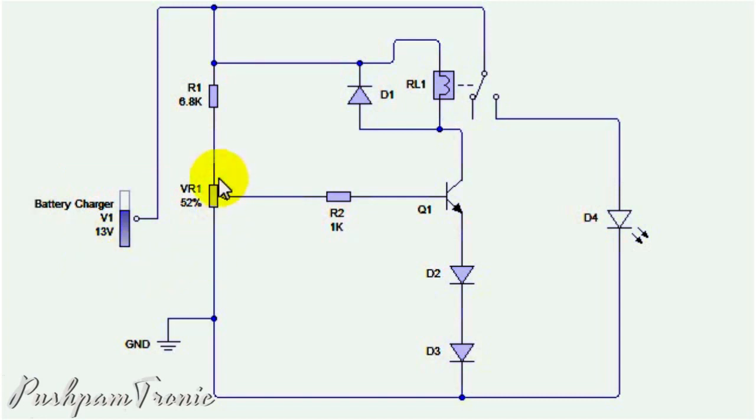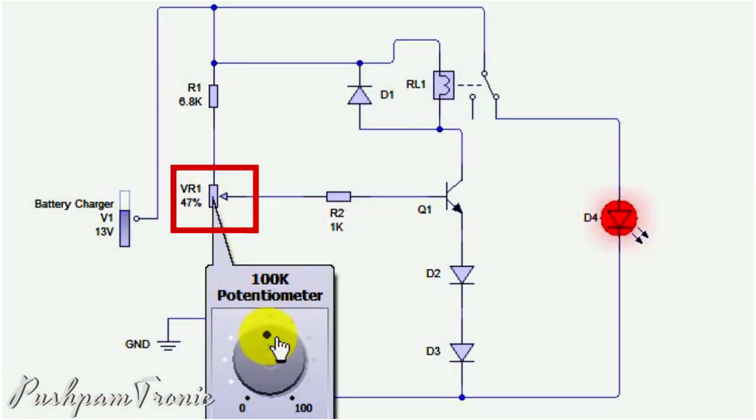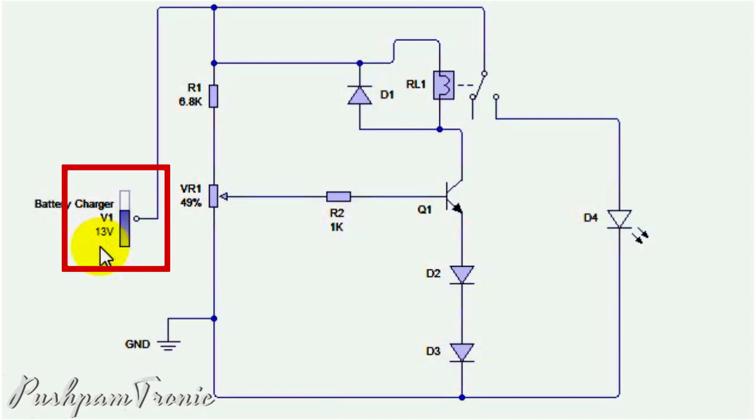Then slowly rotate the variable resistor to achieve transistor operation. Now check the circuit again. For example, at the beginning of charging, the battery voltage was 12 volts. As the charge increases and reaches a threshold of 13.5 volts,